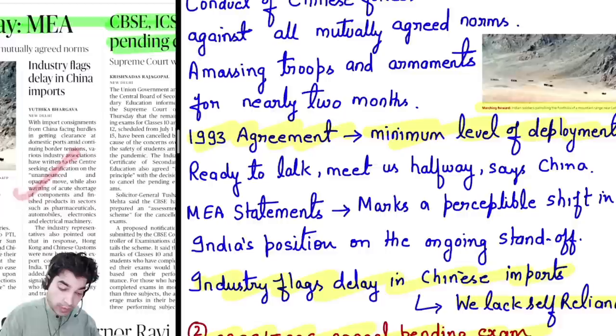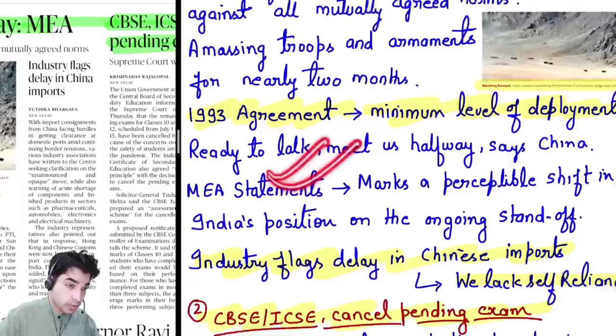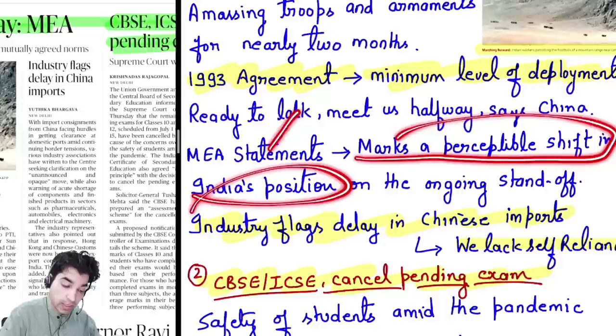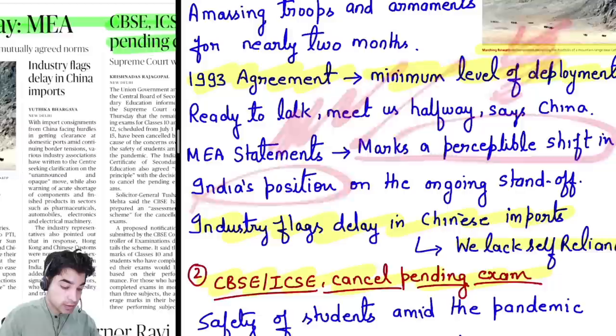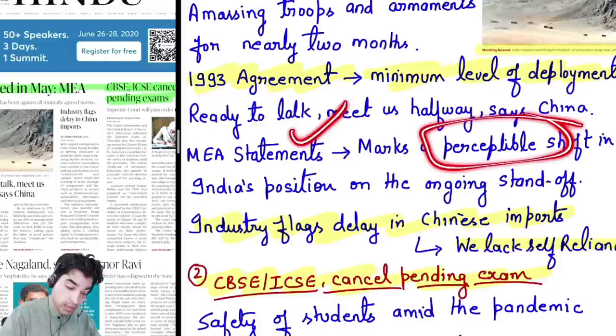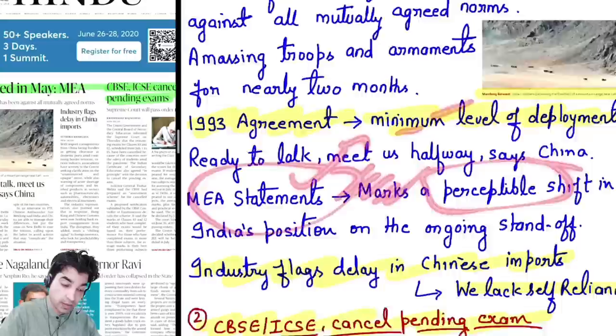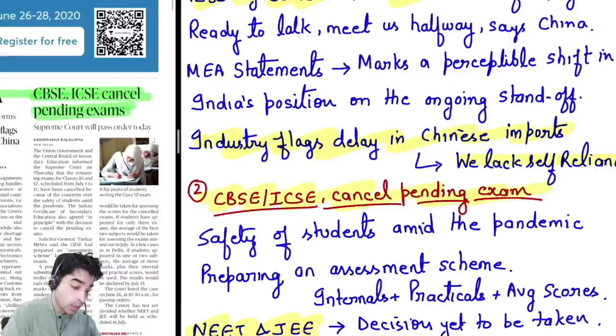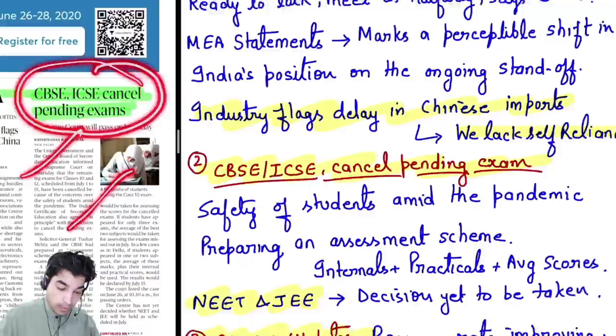China has offered that it is ready to talk and meet halfway, but China's intentions are doubtful. We are following the Ministry of External Affairs' official statements. The MEA has now given a statement marking a perceptible shift in India's position — because of wrongdoing by the Chinese PLA in the ongoing standoff. The MEA is becoming more vocal and is identifying that the PLA is doing considerable wrongdoing there.